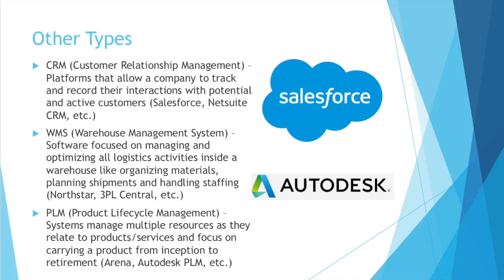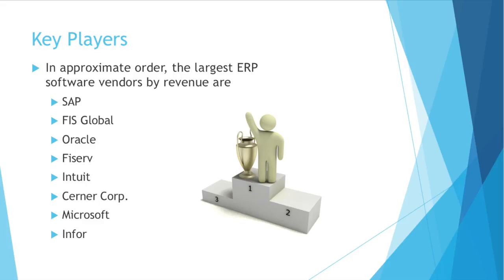PLM — Product Lifecycle Management — refers to systems that manage multiple resources as they relate to products or services. These focus primarily on carrying a product from inception to retirement, so the entire life cycle of a product. Arena, Autodesk PLM, and many more focus on just this one aspect of a business. Now that you have a basic idea of what ERP software is and some of the functions, I'll end on key players — that way, if you hear one of these names, you'll know right away they're ERP software and can have a conversation about it at a high level.